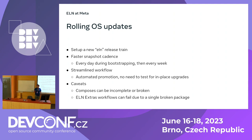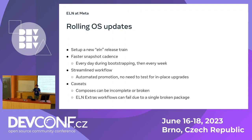Otherwise you end up trying to roll out something that is missing three-quarters of the distribution. Also, ELN Extras workflows can fail — for example, if you add a package that doesn't build. When the workflow fails, the entire workflow is excised from the compose, which is obviously bad. So right now we just keep an eye on it, but I need to actually add monitoring so we validate them before pulling them in.